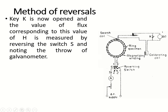Once the specimen attains the cyclic magnetic state, and once there is a change in the flux linkage in the specimen, you have to open the key. The value of flux corresponding to this H is measured by reversing the switch and noting the throw of the galvanometer. The ballistic galvanometer is used for measuring the amount of charge passing through the circuit, and from the charge we can find the flux.